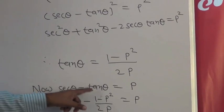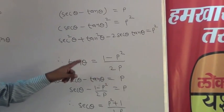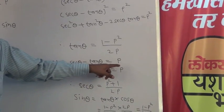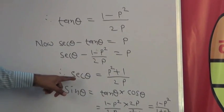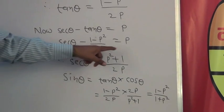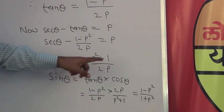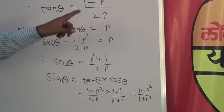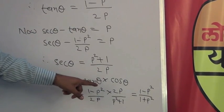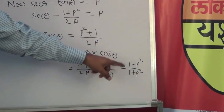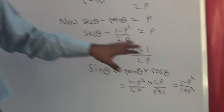Now sec θ - tan θ = P. Substituting value of tan θ, sec θ - (1 - P²)/2P = P. After solving this, we get value of sec θ = (P² + 1)/2P. Now sin θ = tan θ × cos θ. Substituting the values of tan θ and cos θ, we get sin θ = (1 - P²)/(1 + P²). Thus we have got these values.